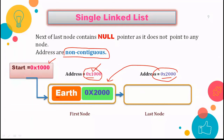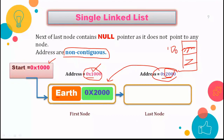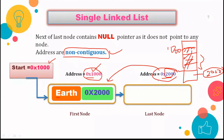The addresses in a linked list are non-contiguous. The first node is stored at address 1000, and the next node is at address 2000. It may happen that not all memory locations are free, so the next free location could be far away — there are many addresses between 1000 and 2000. Because 2000 was the next free location, the next node was stored there, making them non-contiguous.